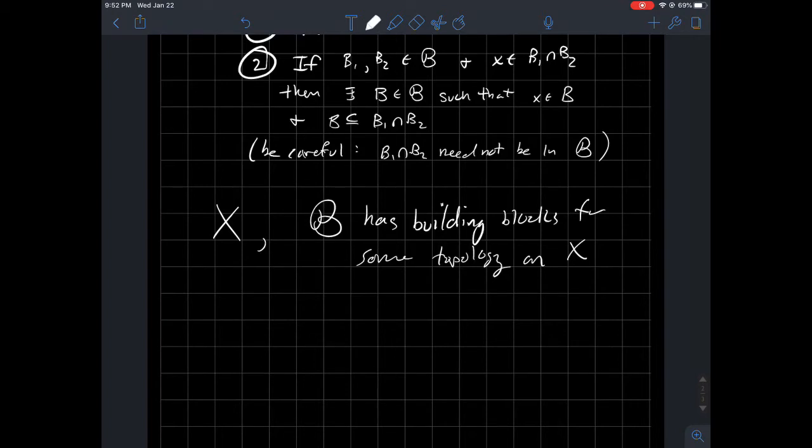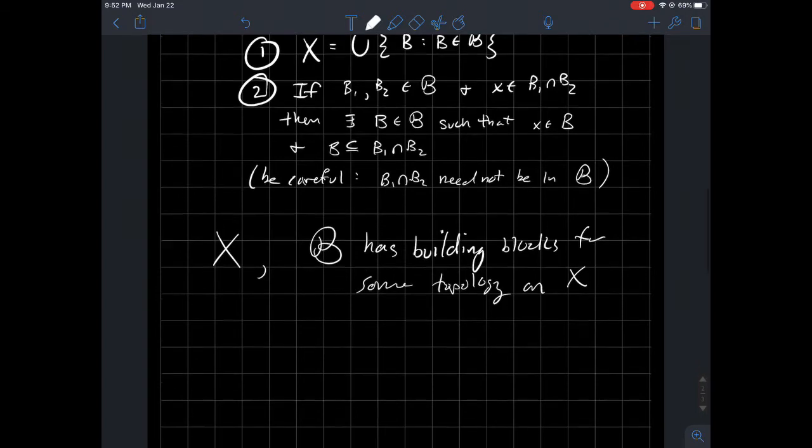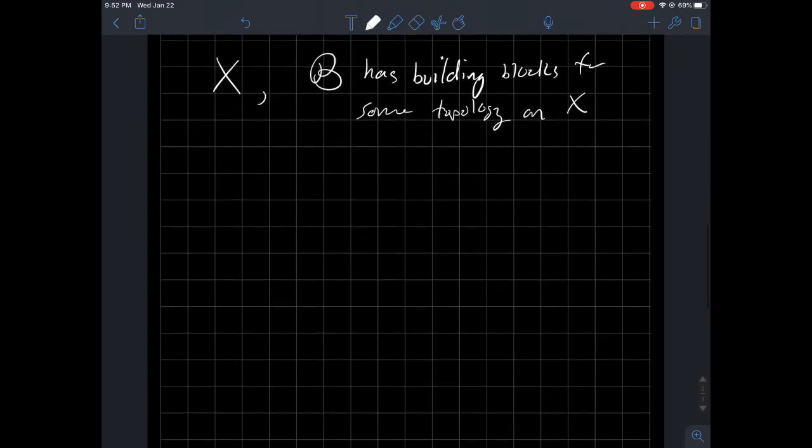Maybe you don't know how to describe all the funky things that might be in the topology T. Or maybe you don't know you even have a topology, but you have this set. And so what we're going to say is that B, this collection of subsets, generates a topology T.